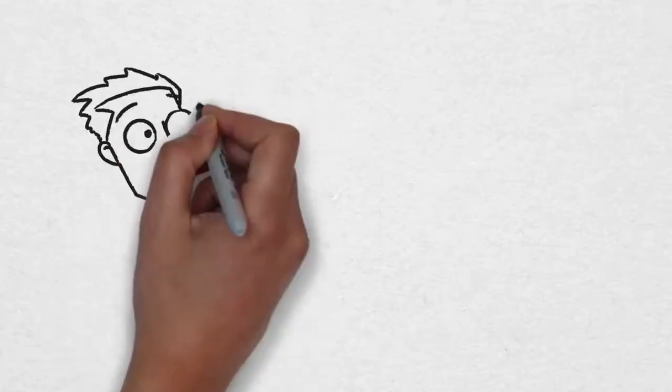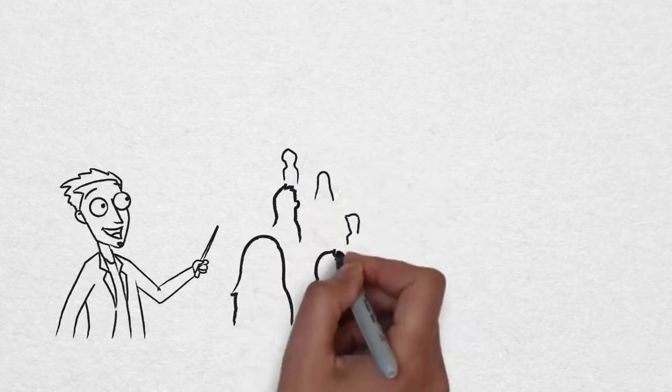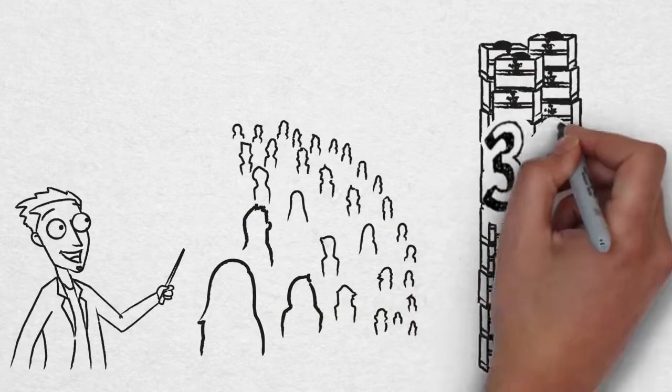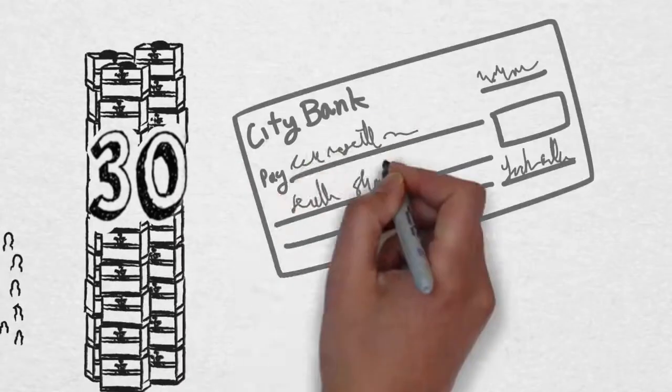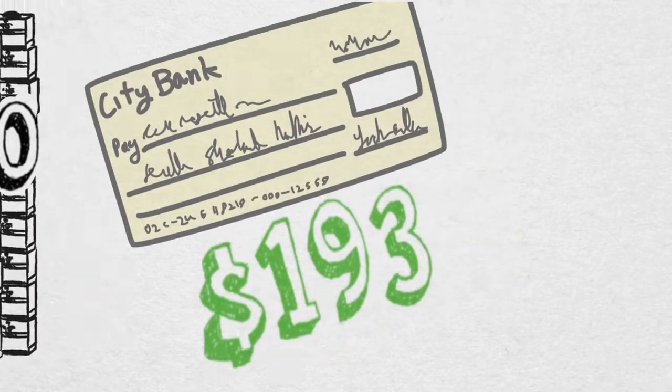In the first month, you share a Clean Nine and Fit One product pack with two people, and they go on to share with two people. At the end of the month, you'll have 30 people in your business and you'd earn a check for $193. It's not a new car, but hey, we're just getting started.